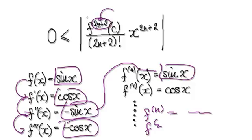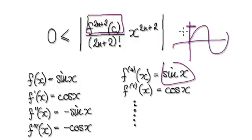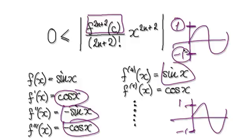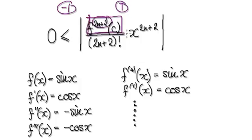The thing is, the whole value here itself will be between — well, sine of x is always trapped in between 1 and negative 1. Cos of x will always be trapped in between positive 1 and negative 1. Even if you have negative sine or negative cos, it will always be trapped in between 1 and negative 1. No matter how many times you differentiate it, the whole value here will always be between negative 1 and 1.